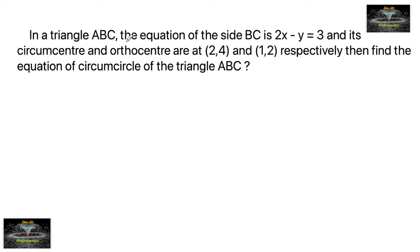In a triangle ABC, the equation of side BC is 2x - y = 3, and its circumcenter and orthocenter are (2, 4) and (1, 2) respectively. Find the equation of the circumcircle of triangle ABC.